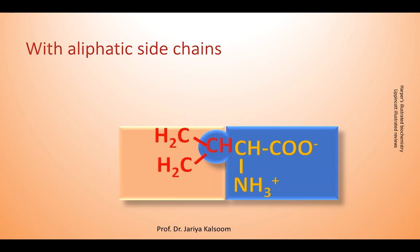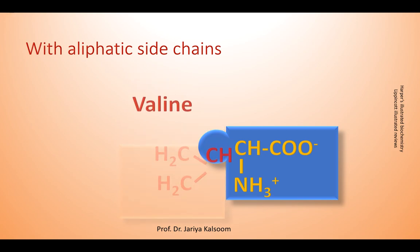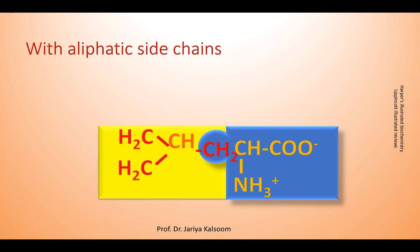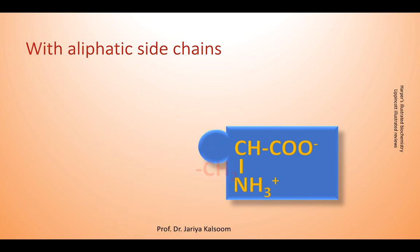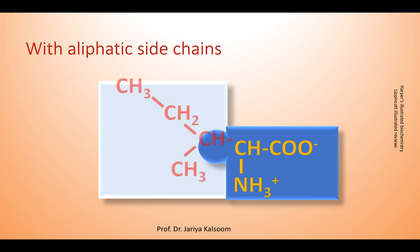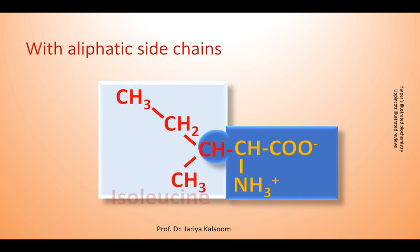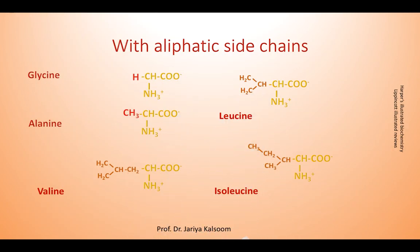If there is a branched R chain, it may be valine or it may be leucine, as shown in this diagram. These are the amino acids with aliphatic side chains.